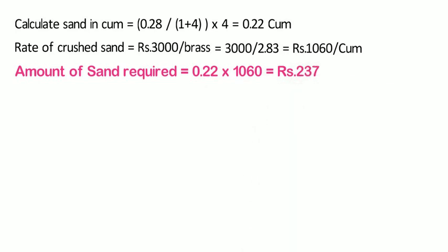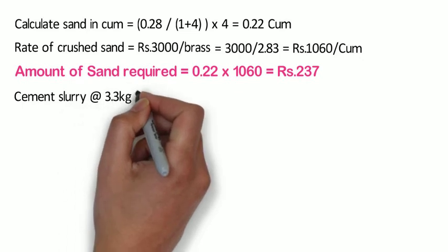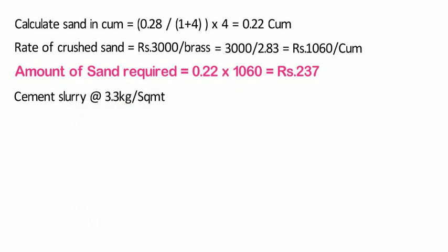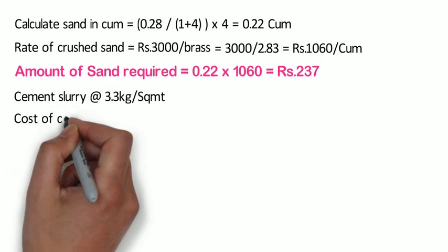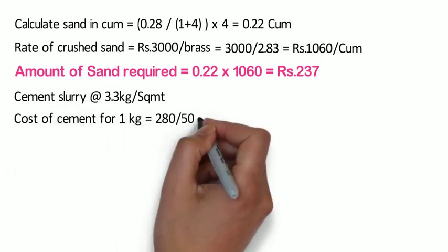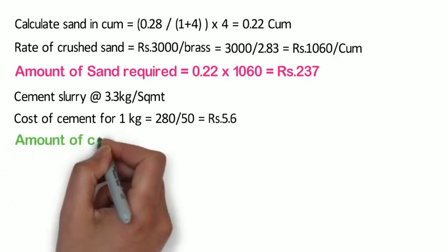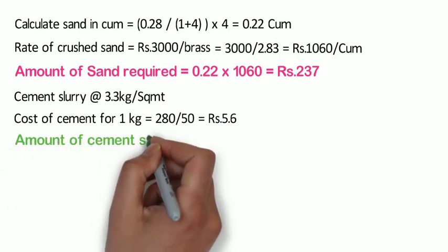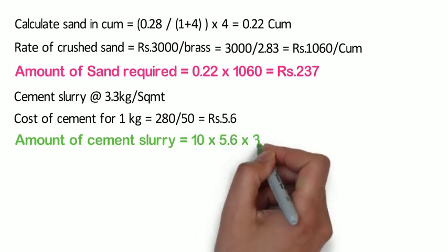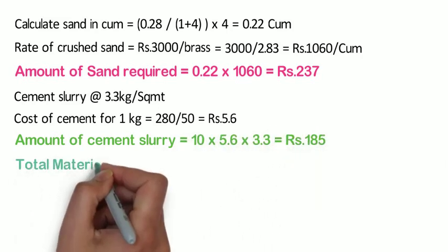After laying cement mortar, cement slurry shall be laid over the bed of mortar at the rate of 3.3 kg per square meter. The cost of cement per kg is 280 ÷ 50 = 5.6 rupees. Hence for 10 square meter area, the amount of cement slurry required shall be 10 x 5.6 x 3.3 = 185 rupees.